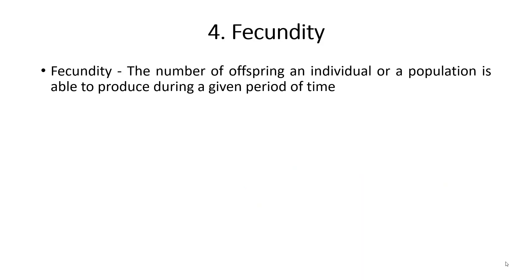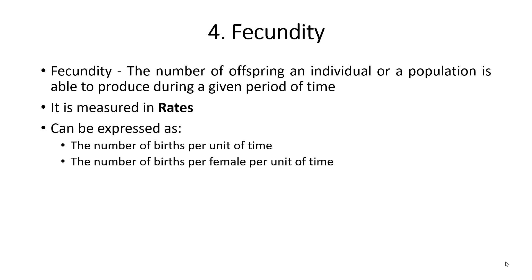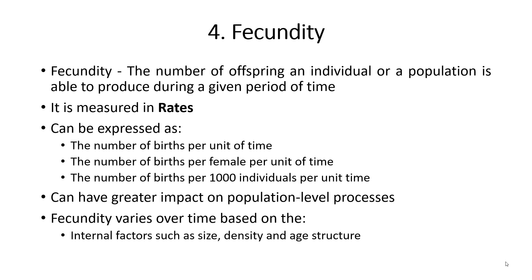Fecundity refers to the number of offspring an individual or a population is able to produce during a given period of time. It is measured in rates — for example, the number of births per unit of time, per female per unit of time, or per thousand individuals per unit time. It can have a greater impact on population-level processes. While maximum fecundity is constant for populations, realized fecundity varies over time based on size, density, and age structure. External conditions such as food and habitat availability can also influence fecundity. Density-dependent regulation provides a negative feedback.